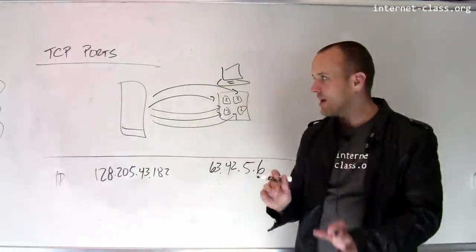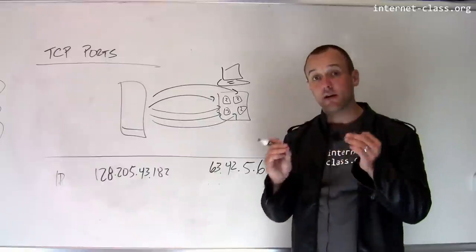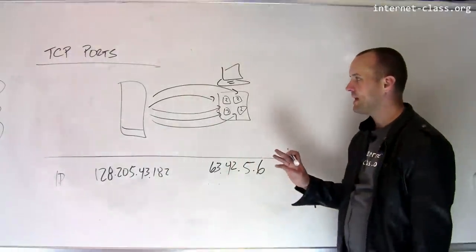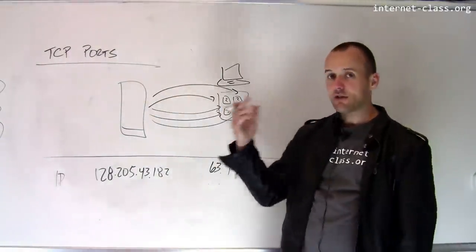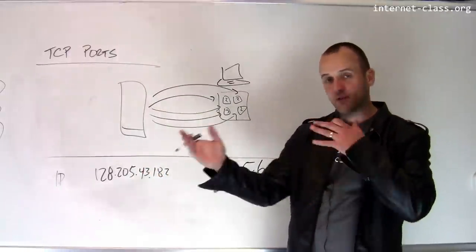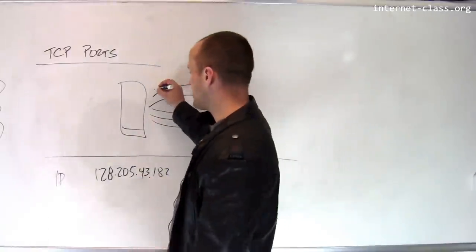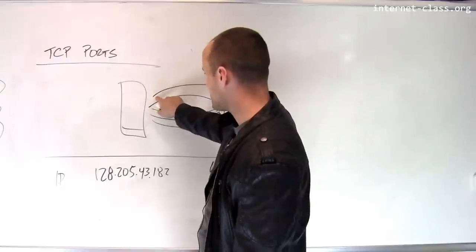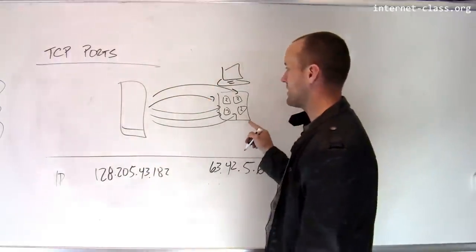So TCP introduces something called ports. And TCP ports are a number, and every connection that is made over TCP has both a port number on each side of it. The connection is full duplex, so the connection allows both the client and the server, or both hosts, to send and receive data from the connection. But each connection has a port on either side.